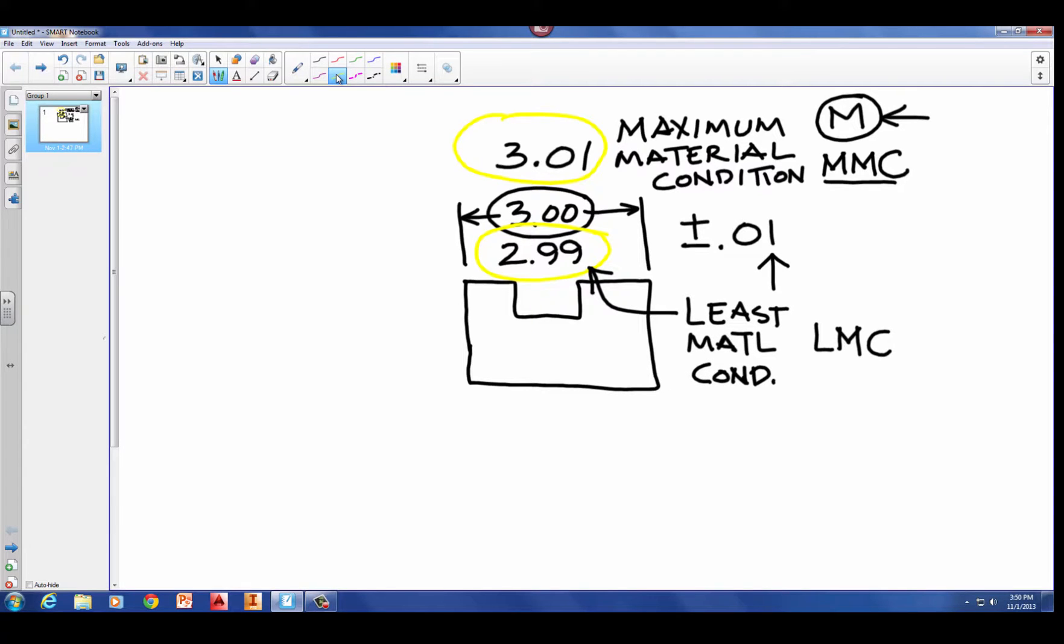Alright? So, we have the nominal size, which is our 3.00. We have our tolerance, which is the amount that the part can vary from the nominal size. And in our case, this is given as a plus or minus, which we call a bilateral tolerance, because we can either add or subtract.